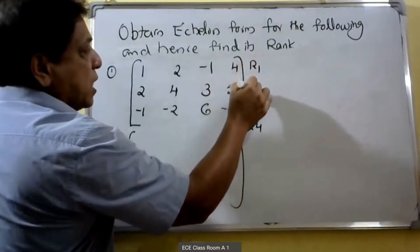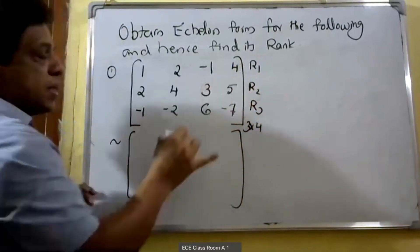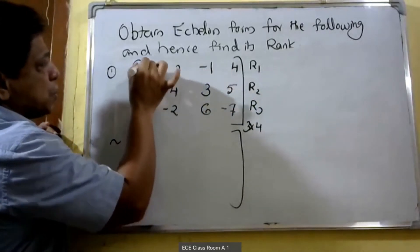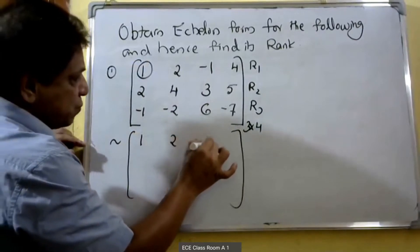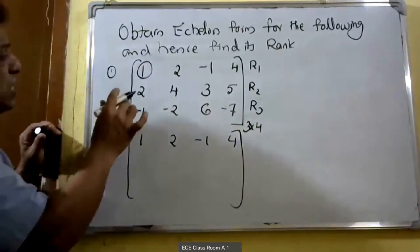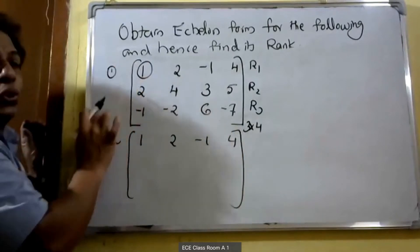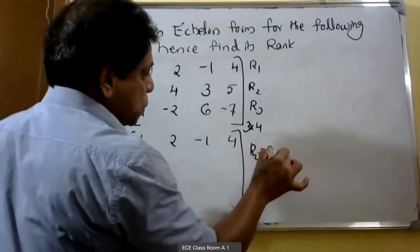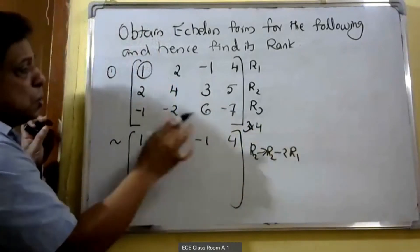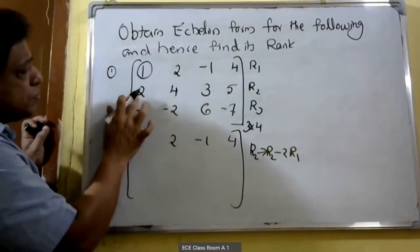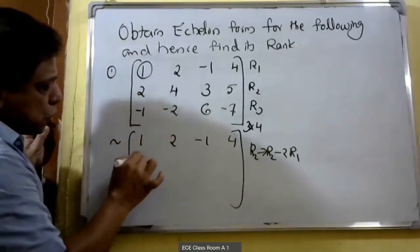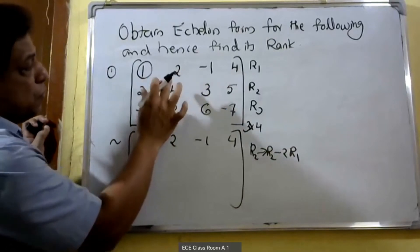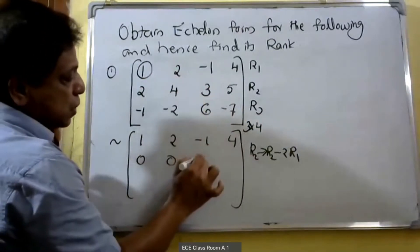This is the first row R1, second row R2, third row R3. The first non-zero element in the first row is 1, so the first row stays as 1, 2, minus 1, 4. Then we change the leading element of R2 to 0 using the operation R2 changes to R2 minus 2R1. That gives: 2 minus 2 equals 0, 4 minus 4 equals 0.